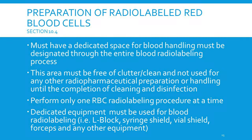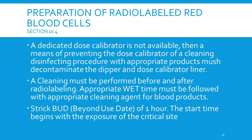Preparation of radiolabeled red blood cells is one of the biggest and most detailed parts of USP 825. You must have a dedicated space for blood handling, designated throughout the entire radiolabeling process. The area must be free of clutter, clean, and not used for any other radiopharmaceutical preparations until completion of cleaning and disinfecting. Only one blood cell radiolabeling procedure may be performed at a time. Dedicated equipment must be used: L-blocks, syringe shields, vials, forceps, and any other equipment needed.